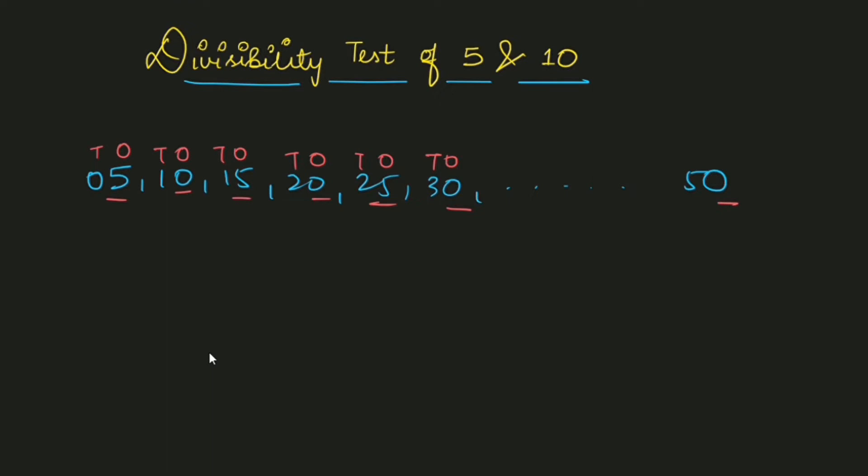I will write a big number here: 1, 2, 3, 4, 5, 6, 7. It's a 7-digit number. Now I will ask you if this can be divided by 5 or not. What would be your answer? If you don't have a divisibility test, what will you do? You will be dividing it by 5 just to check. But if you ask me, I will say no.